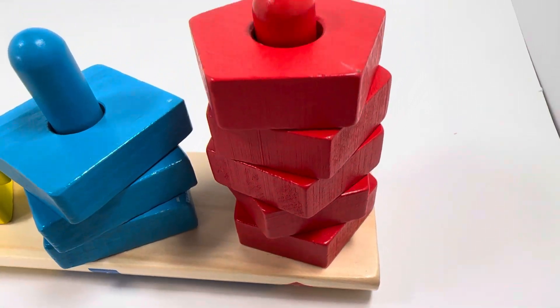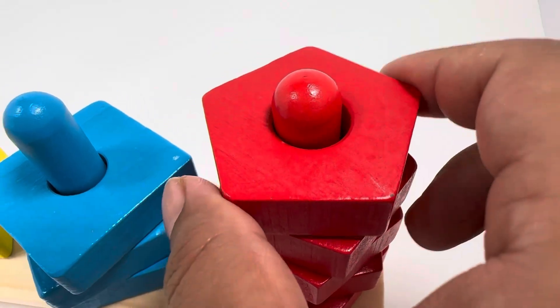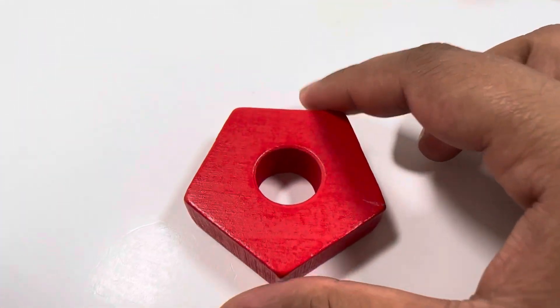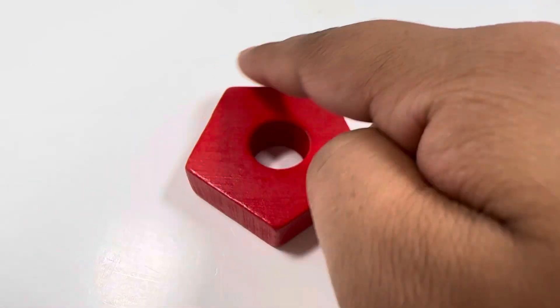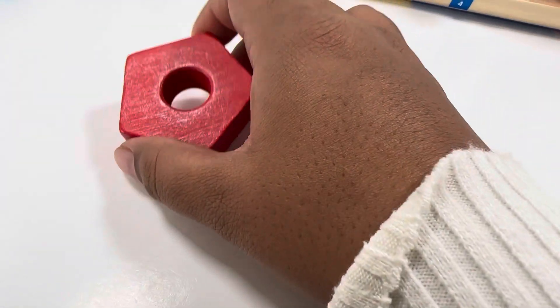And it's a pentagon. A pentagon has five sides: one, two, three, four, five. It looks like some sections of a soccer ball.